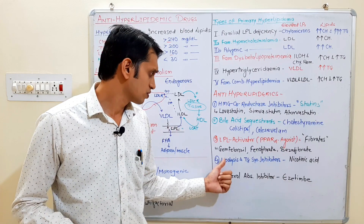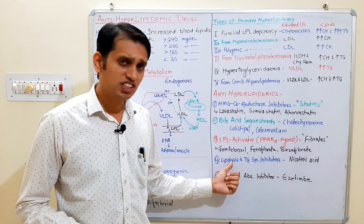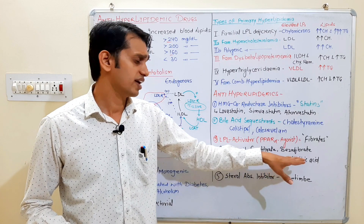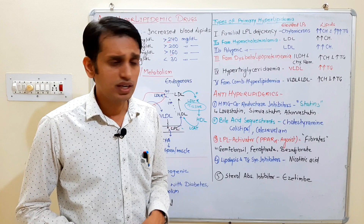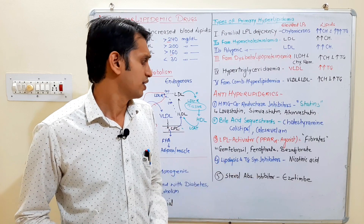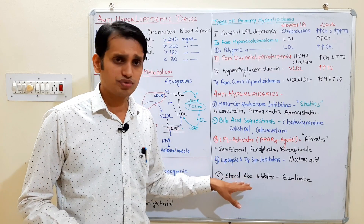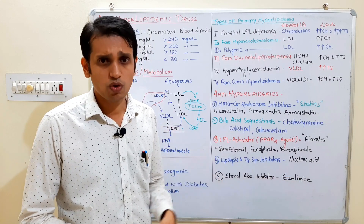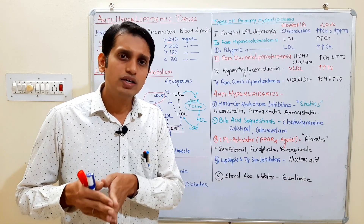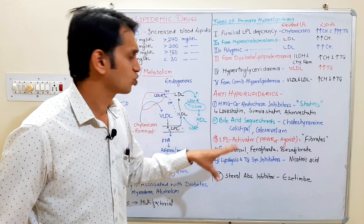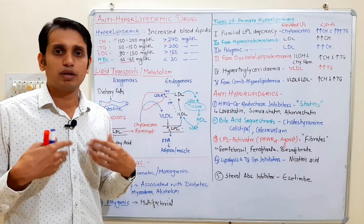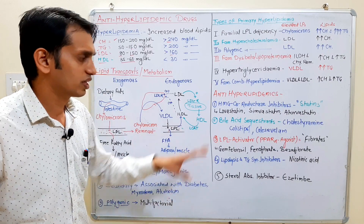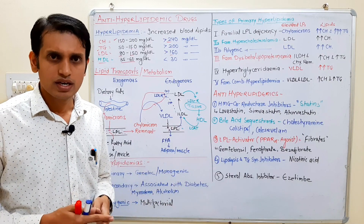Next are the lipolysis or triglyceride synthesis inhibitors. The drug here is nicotinic acid, or niacin, which can reduce lipolysis. Finally, there are sterol absorption inhibitors — the drug is ezetimibe. These are the basic drug categories for controlling blood lipid levels, and they are collectively called anti-hyperlipidemic drugs.